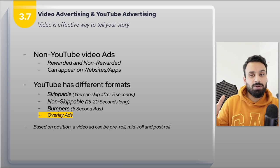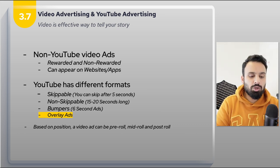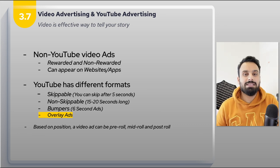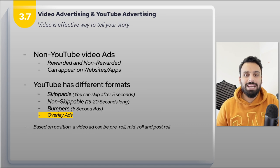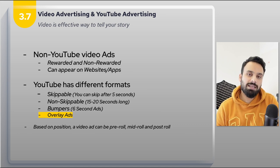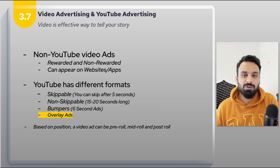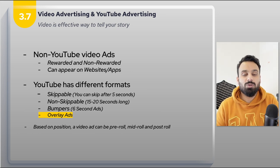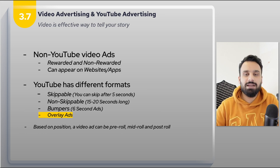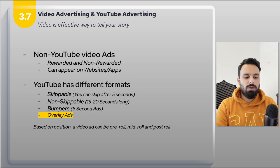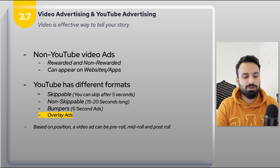For non-YouTube video ads appearing on websites and apps, there are two types: rewarded and non-rewarded. Rewarded ads appear in apps — for example, if you've used all your lives in a game and can't play for 24 hours, the app gives you the option to watch a video ad to completion and receive a reward like a new life. Those are called rewarded ads. Anything that is not rewarded is a normal non-rewarded ad.